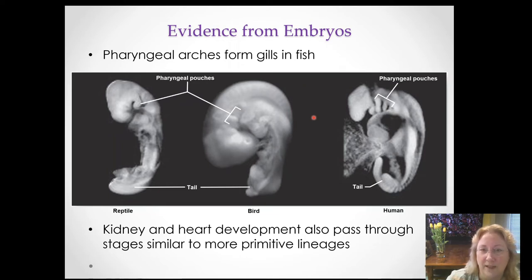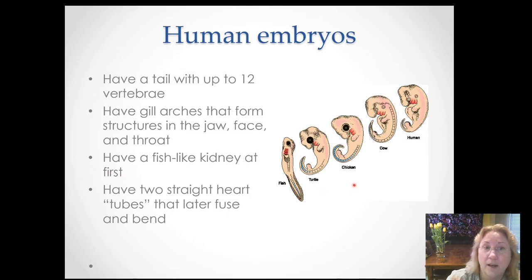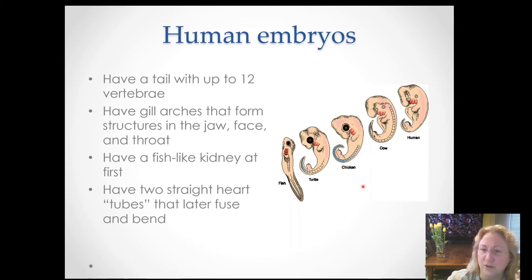The fact that all vertebrates have this similar pharyngeal stage, even though many vertebrates today don't have gills, is an indication that all vertebrates have a common ancestor, and that ancestor — the common ancestor of all vertebrates — was a fish. Here's a cartoonish depiction of the pharyngula stage for all the different vertebrates: reptiles, birds, and two mammals, with the gill arches highlighted. Human embryos also have a tail at this stage, as do other vertebrates, which is normally reabsorbed.